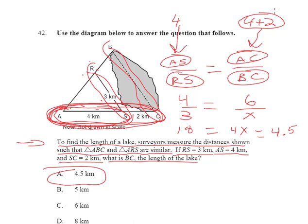In other words, it wouldn't be 4, AS wouldn't be 4 and AC wouldn't be 2. AC is the whole thing, 4 plus 2, which is equal to 6.